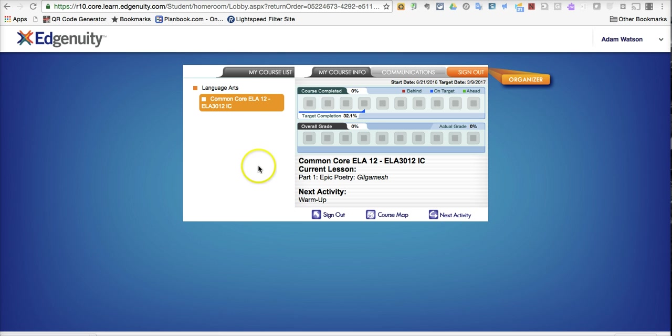You can see any assigned courses. In this case, I have this Common Core class that I've assigned myself. I'm going to choose it to go to the next activity so you can see how to change the language.